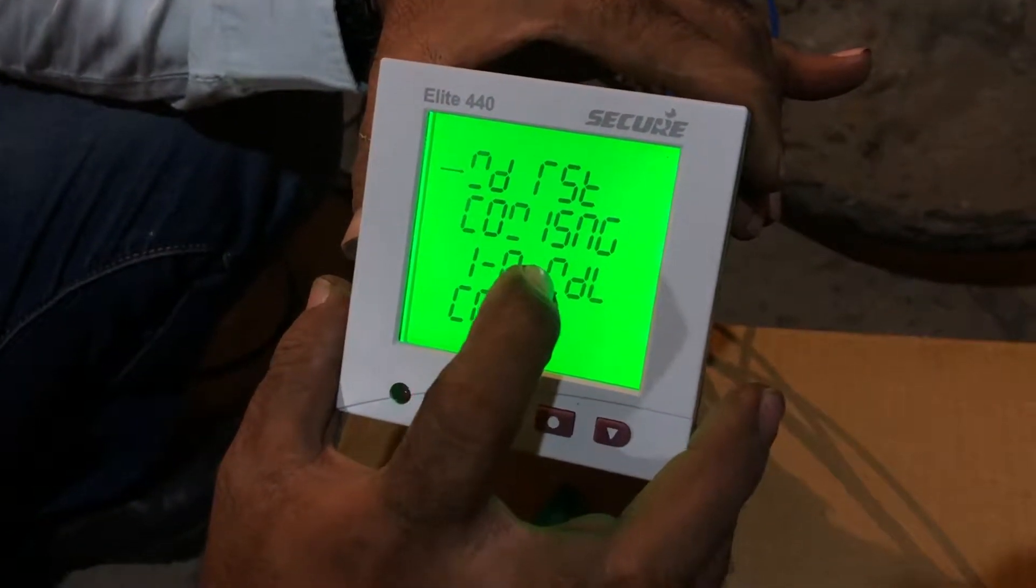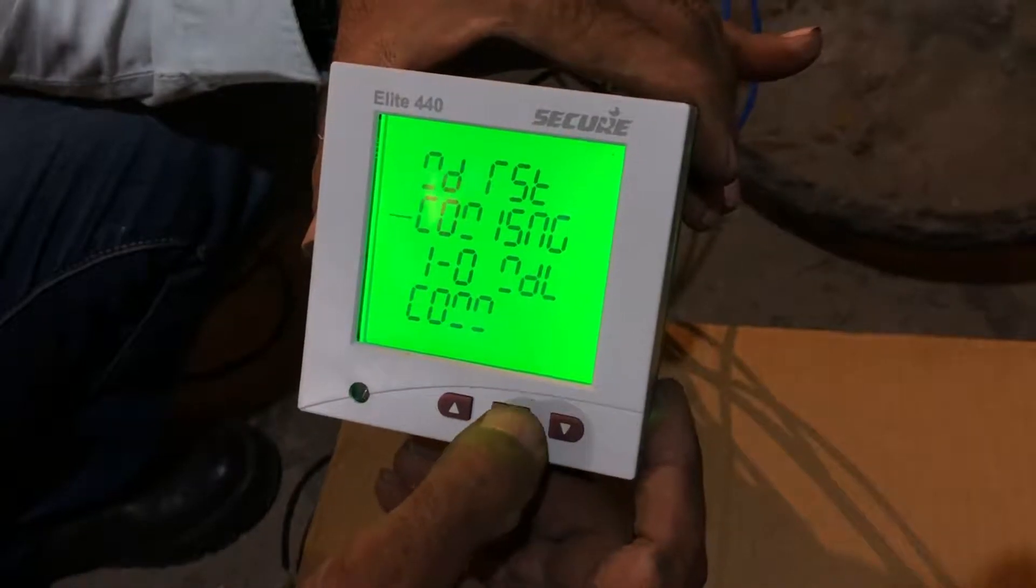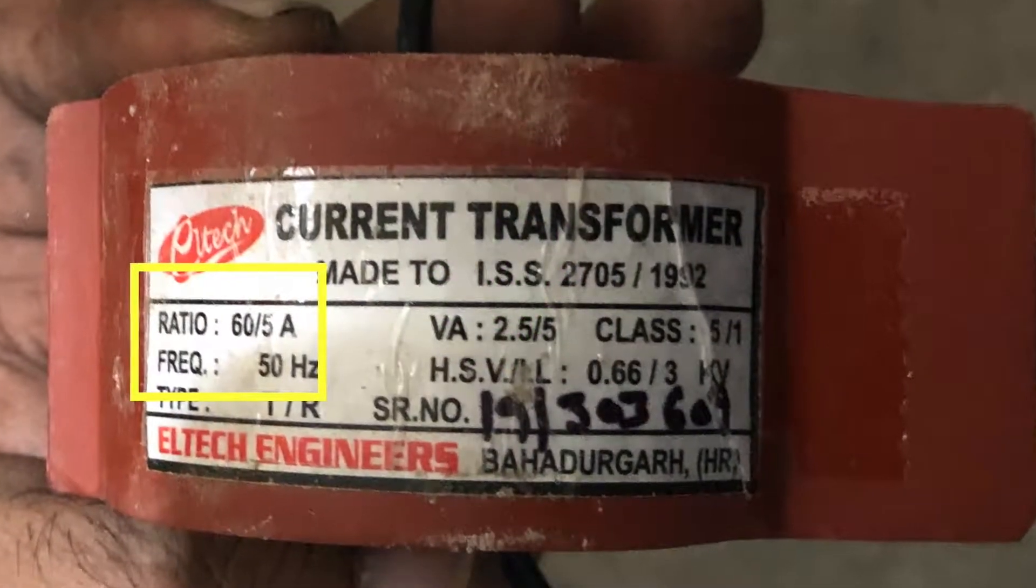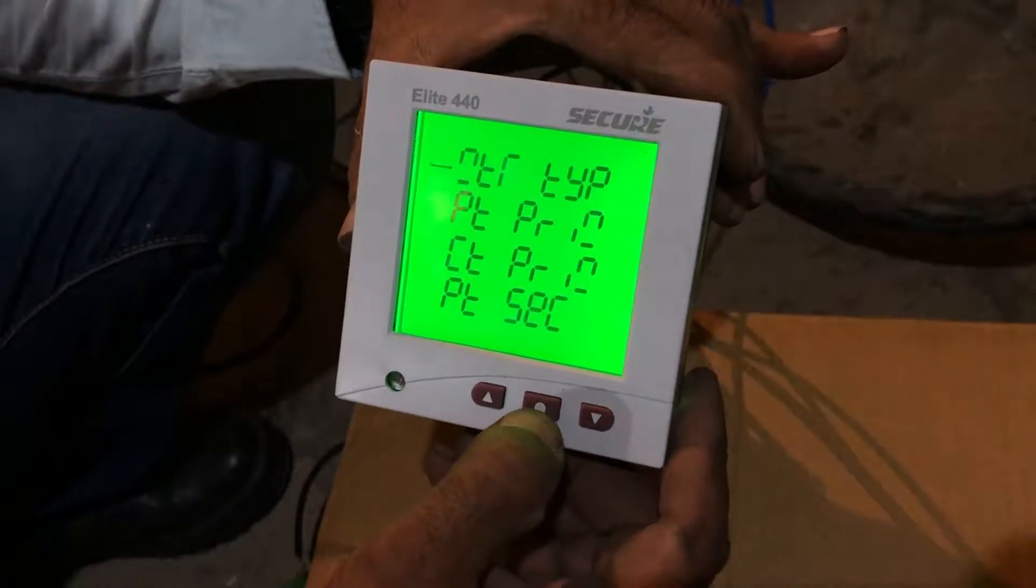This menu says commissioning. As seen on the CTE, the ratio is 60 is to 5. We will put the same on our MFM.